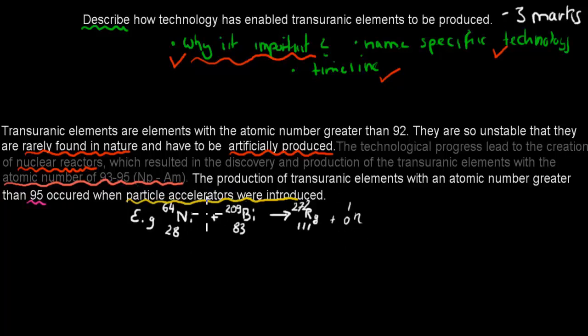So this is what I also have here, which is probably not actually a necessity for this kind of question, because it's only three marks, is actually giving an equation as well. And this is just what happens in a particle accelerator when a nickel smashes into a bismuth to create a roentgenium. This is the 111, which is a transuranic element. That was just an example. This would be maybe a bit too much for this kind of three-mark question, but if you know one, it's always good to include as well.